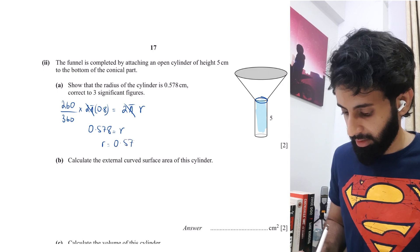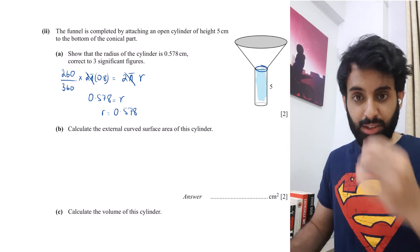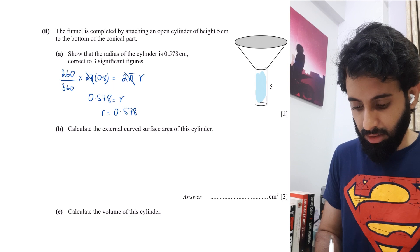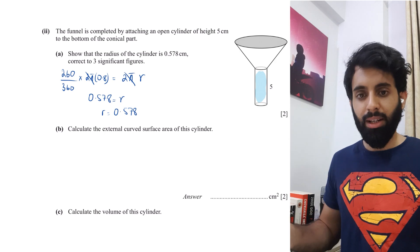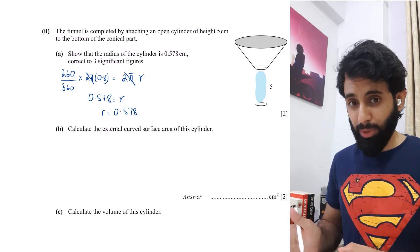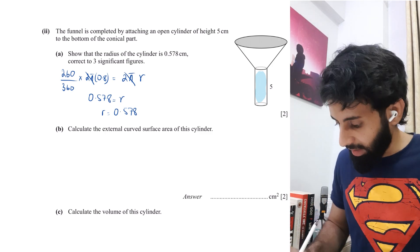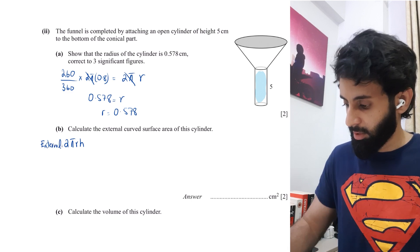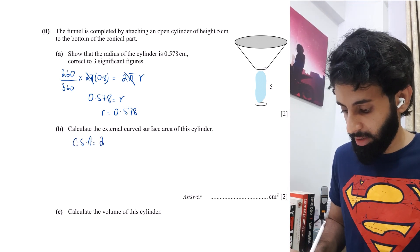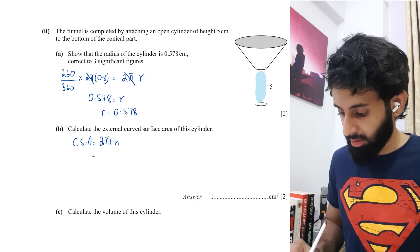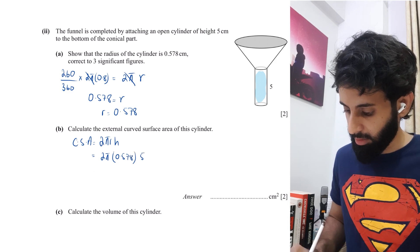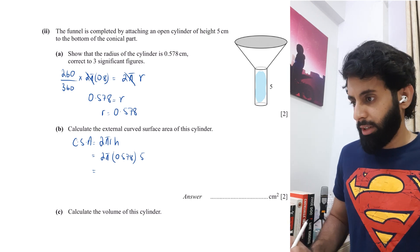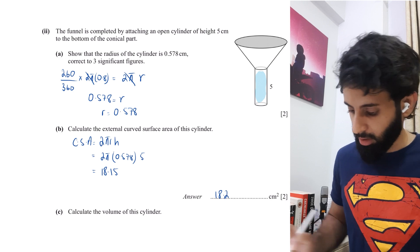Now calculate the external curved surface area of the cylinder. Be careful — don't use the total surface area formula; we only need the curved surface area, which is 2πrh. So: 2π × 0.578 × 5 = 18.15, which rounds to 18.2 cm² correct to three significant figures.